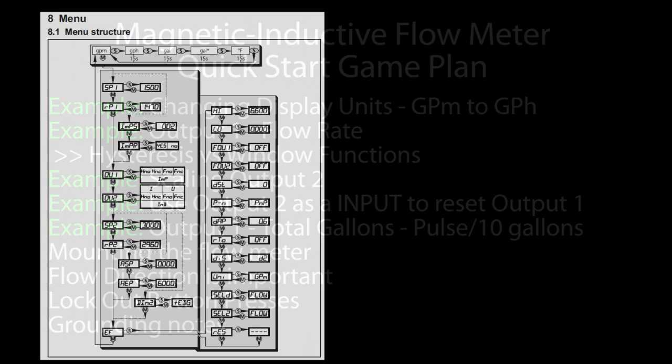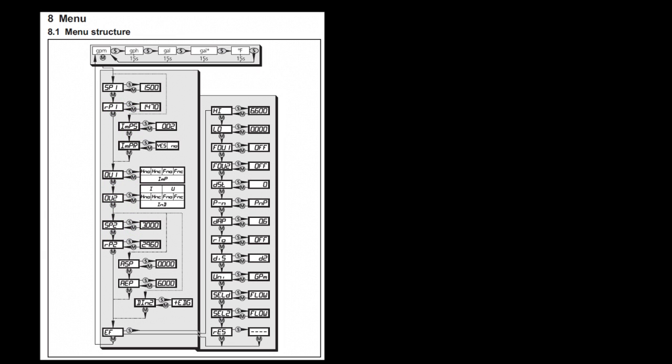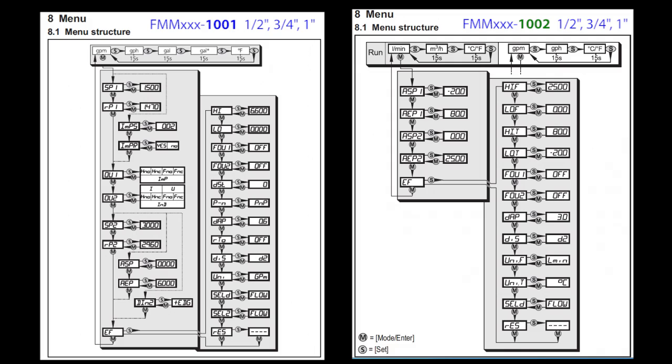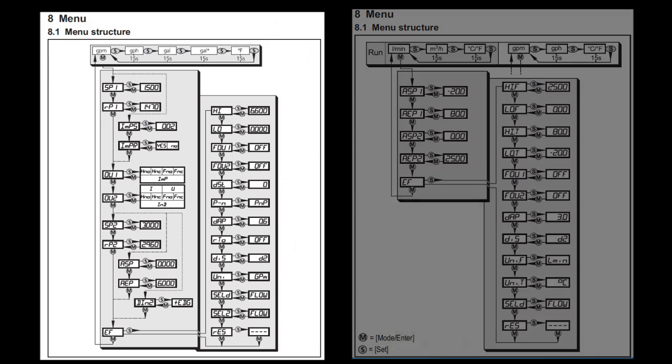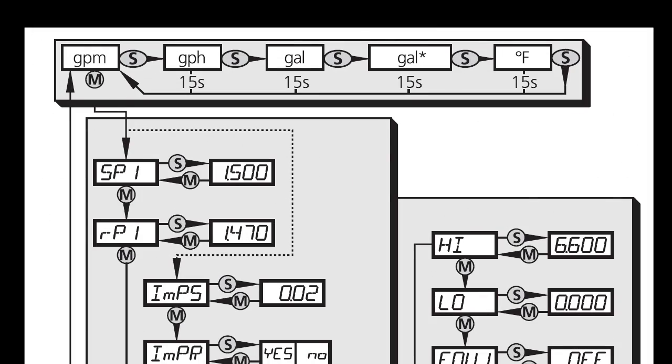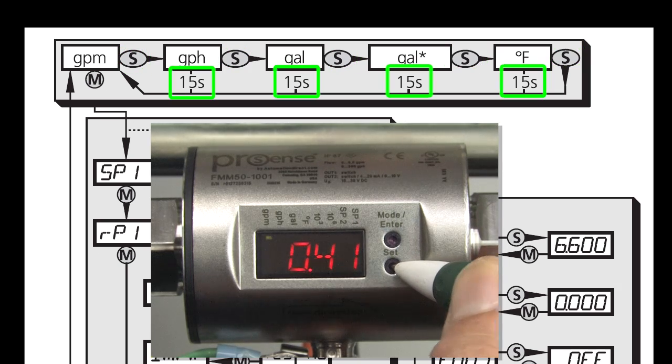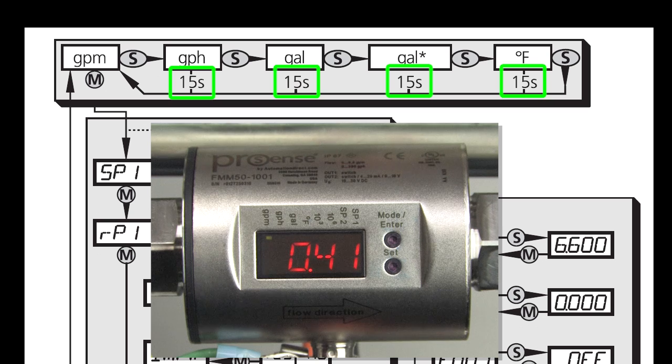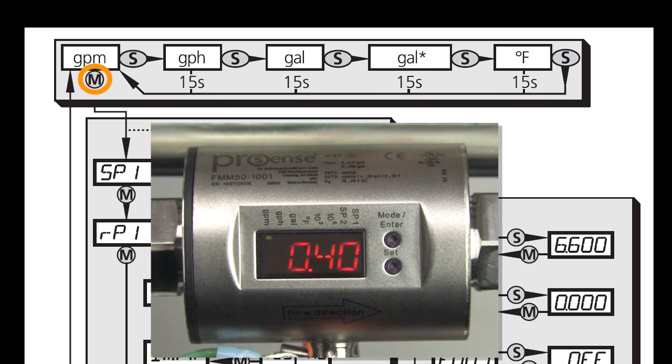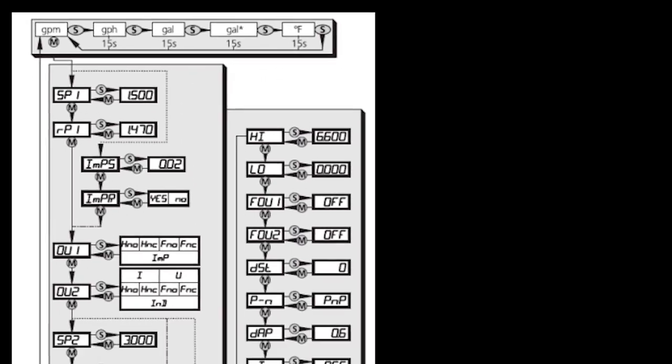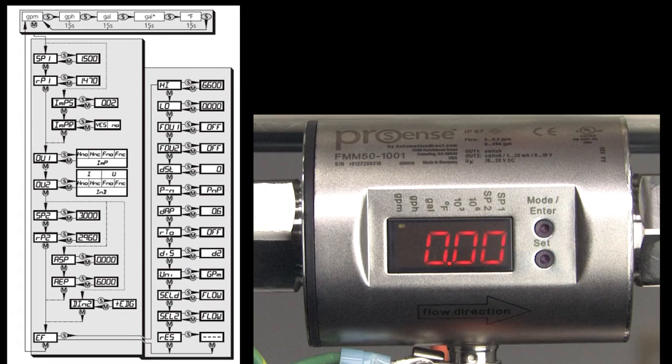To configure the flowmeter, go to chapter 8 of the user manual where you'll find a parameter menu like this one. We're using the smaller 1001 series flowmeter in this video. The 1002 version is very similar but it has fewer options since it only has two analog outputs. The chart is telling me to press the S button to cycle through the display options and each of those will fall back to the default display after 15 seconds. And the M or mode button drops us down into parameter setting mode.